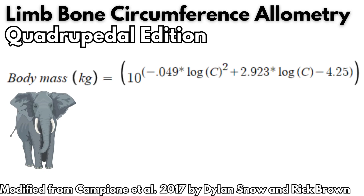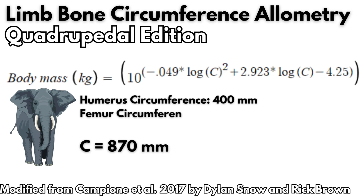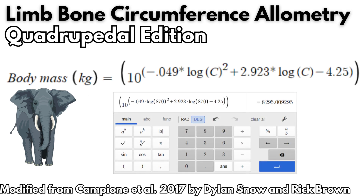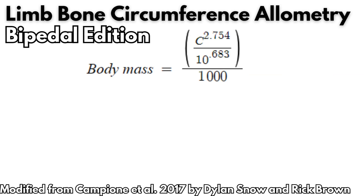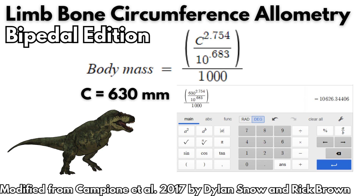For a quadruped example: an elephant with a humerus circumference of 400 mm and a femur circumference of 470 mm gives a total circumference of 870 mm. Plug that into the simplified formula and you get a predicted body mass of 8.3 tons. For a biped example, a theropod with a femur circumference of 630 mm: mass equals 630 to the power of 2.754, all over 10 to the power of 0.683. Divide the result by 1000 and you have 10,626 kilograms.